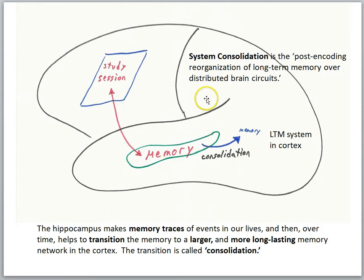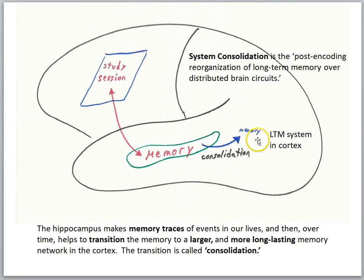The concept we used to describe that process was system consolidation — the post-encoding reorganization of long-term memory over distributed brain circuits. Initially, the hippocampus is a critical structure for retrieving recently learned information, but over time this consolidation process transforms the memory into one that's more dependent upon the cortex for retrieval. The hippocampus makes memory traces of events in our lives and then over time helps to transition the memory to a larger and more long-lasting memory network in the cortex.